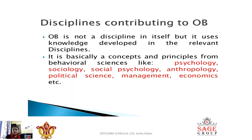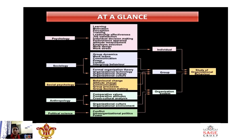Various disciplines — or the relationship of OB with other fields — show that OB is not a discipline in itself, but it uses knowledge developed in relevant disciplines. Basically, it draws concepts and principles from behavioral sciences like psychology, sociology, social psychology, anthropology, political science, management, economics, etc. In this topic, we will study how OB is related with all these other behavioral science fields. This diagram contains all the other fields and their work, and the impact of all these activities on individual, group and organizational levels, which leads to the study of Organizational Behavior.